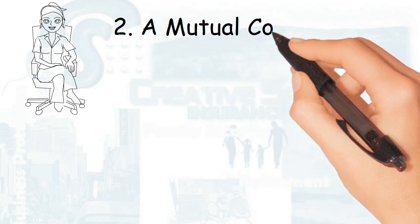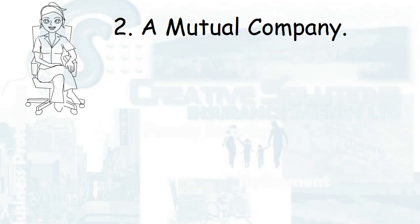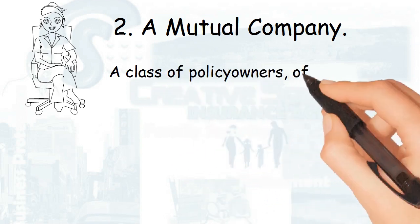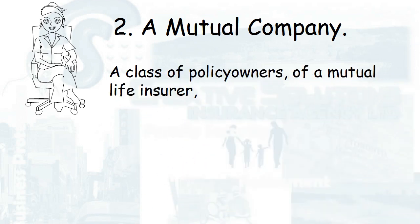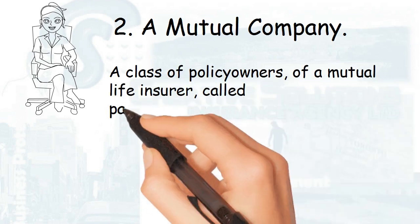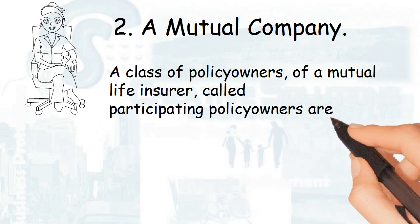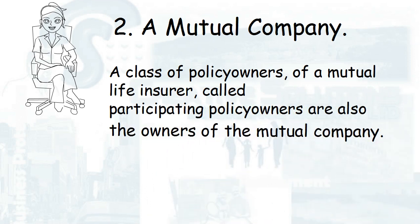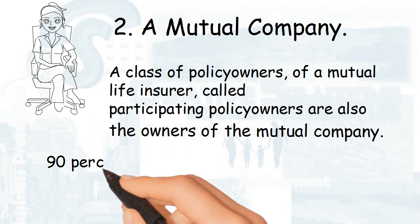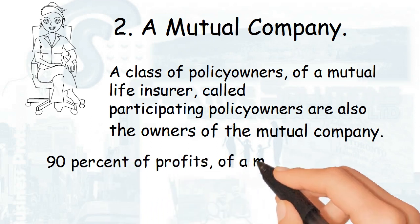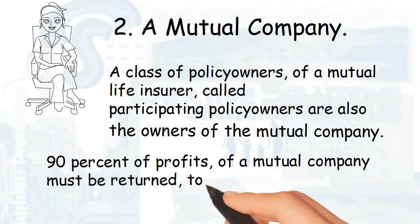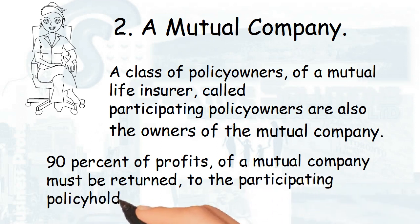The second structure is a mutual company. A class of policy owners of a mutual life insurer, called participating policy owners, are also the owners of the mutual company. Ninety percent of profits of a mutual company must be returned to the participating policy holders.